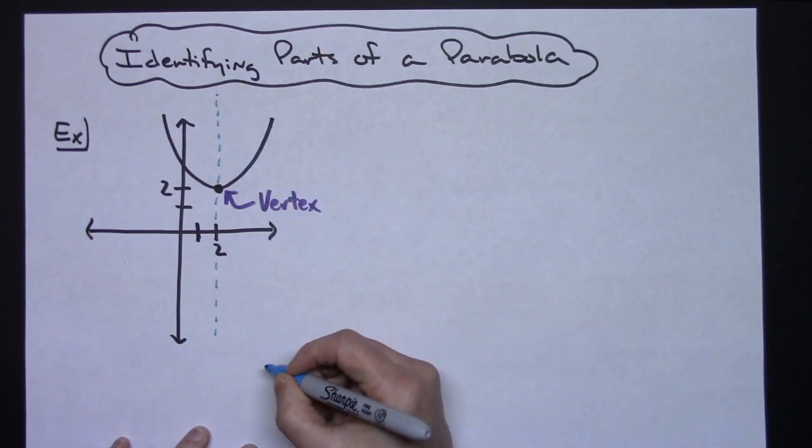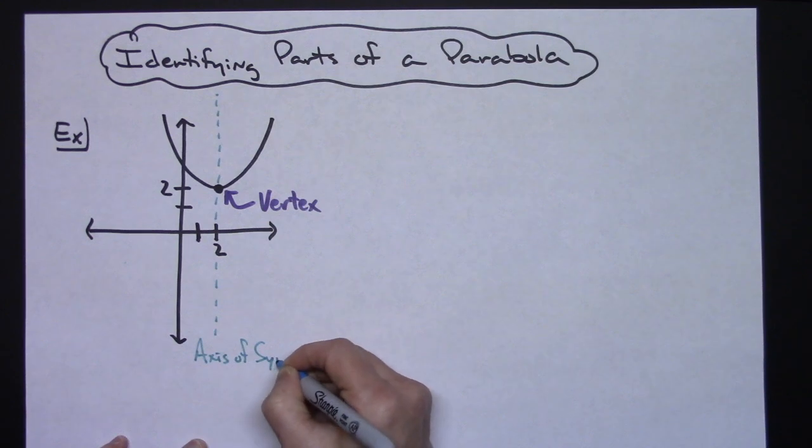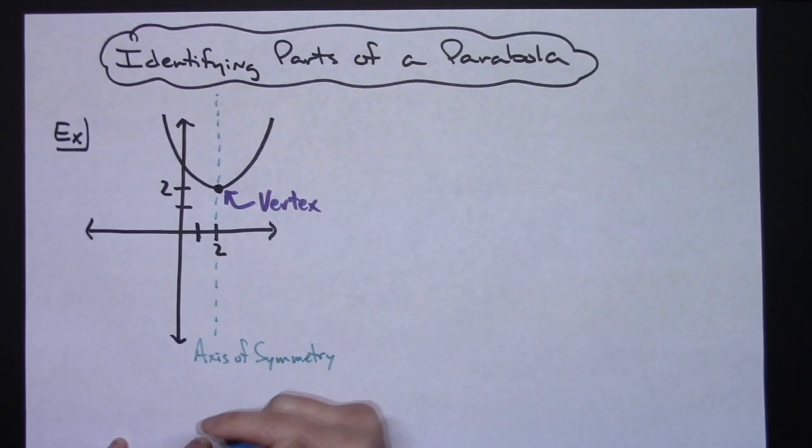That is the axis of symmetry, and it's always represented by an equation because it is a vertical line. So in this scenario, that would be x equals 2 for that axis of symmetry.